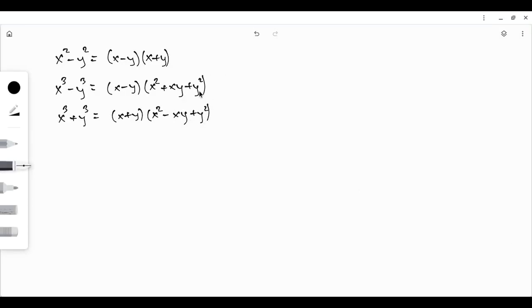Now these are called special forms. This is a difference of squares, so you have something squared minus something else squared becomes the product of the sum and the difference. And this is a difference of cubes, that's the formula, and the sum of cubes, that's the formula. Now to apply these, you may have situations where you have something like...